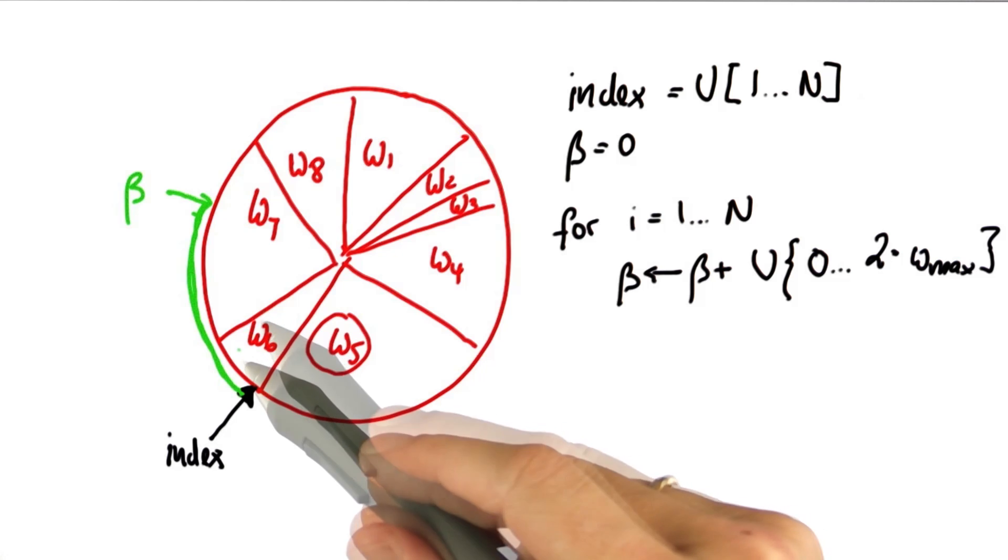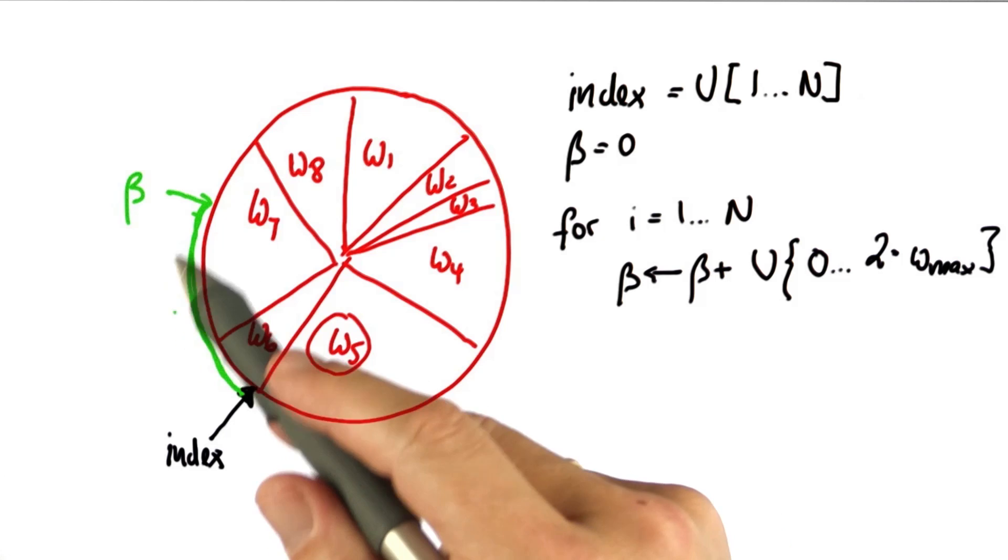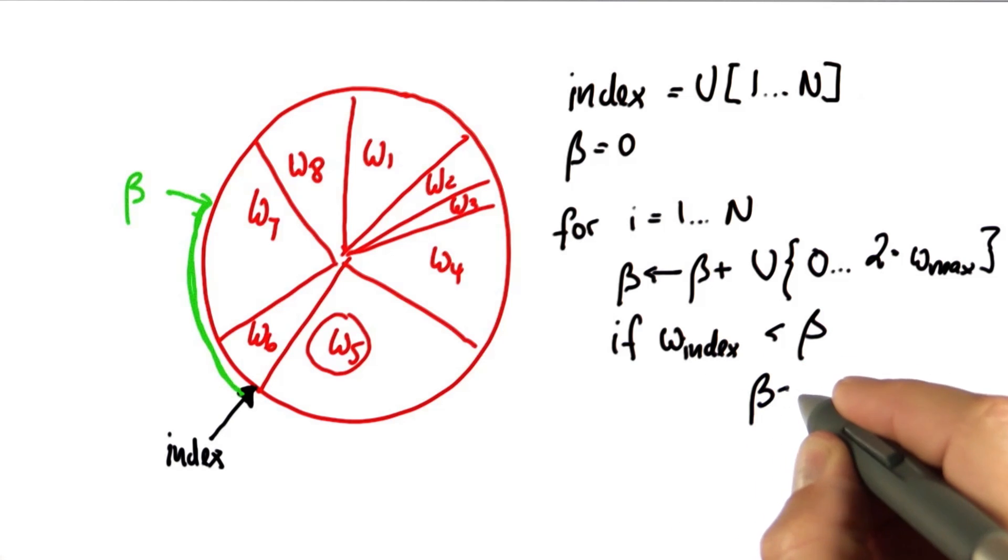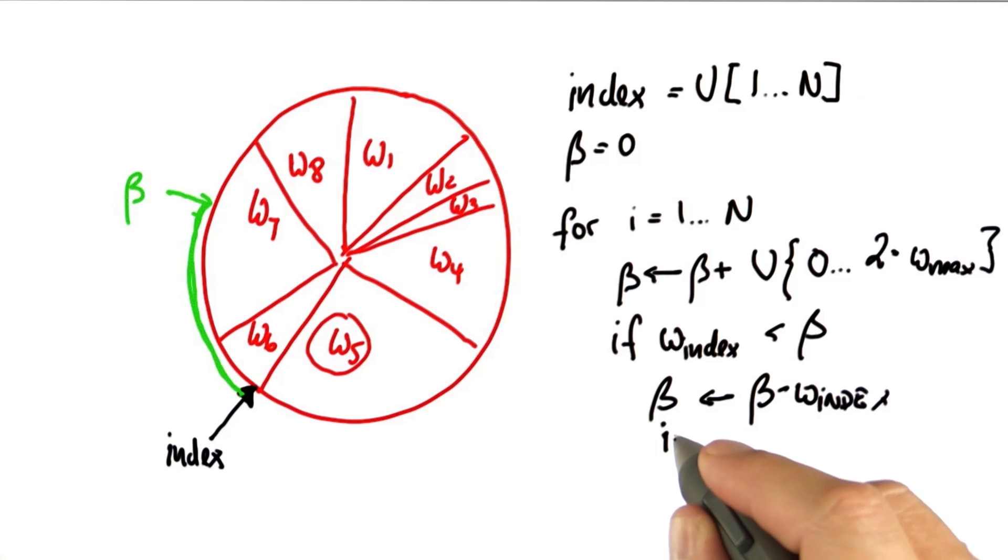If the importance weight of the present particle doesn't suffice to reach all the way to beta, so if W_index isn't as big as beta, then I subtract from beta this very value W_index, and I increment index by 1.